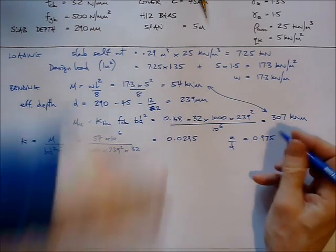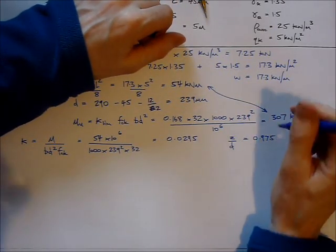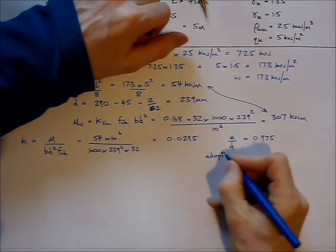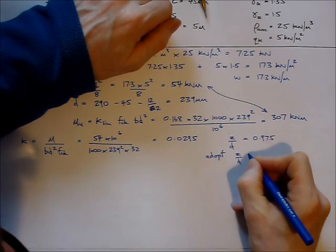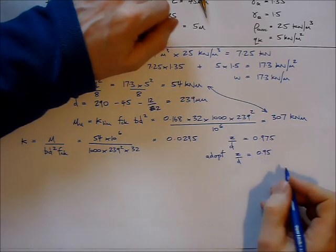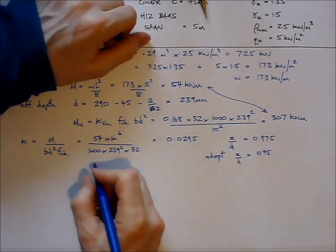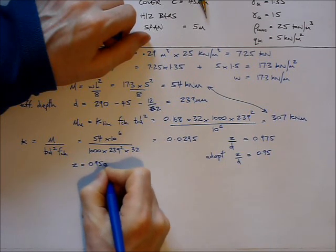So Z over d equals 0.975. Well, that means that the compression zone in the concrete will be absolutely tiny, and generally we adopt a limit of Z over d being no more than 0.95. So that's what I'm going to do here. This means that Z is going to be 0.95d.